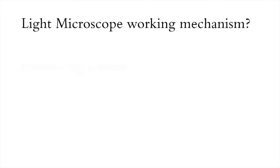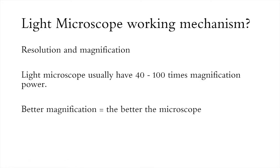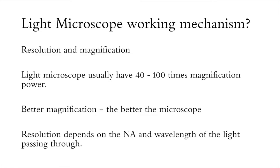There are two features in a microscope we need to consider: resolution and magnification. The light microscope magnification is a measure of how much a microscope can magnify an object. Light microscopes usually have 40 to 100 times magnification power. The resolution power of a light microscope is the ability to distinguish between two points in a specimen, and this depends on the numerical aperture of the objective lens and the wavelength of light passing through.